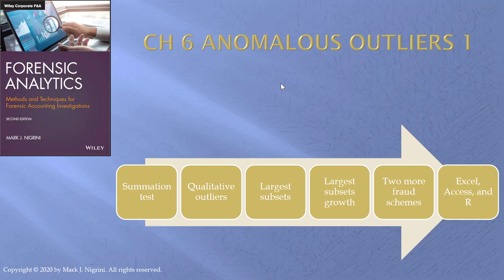This is our review of Chapter 6, the first of two chapters on outliers. Outliers are numbers, or a single number, that is much larger or much smaller than everything else in the data set.